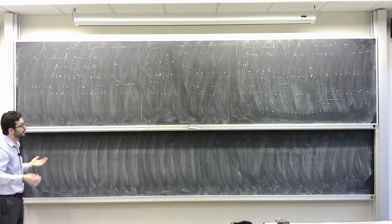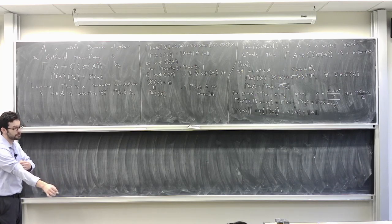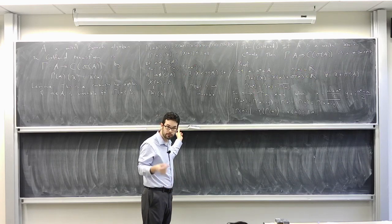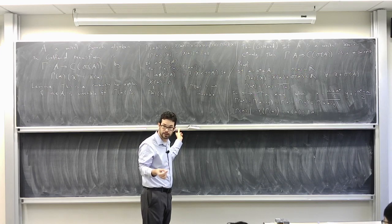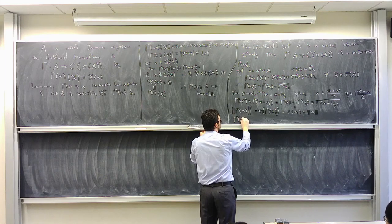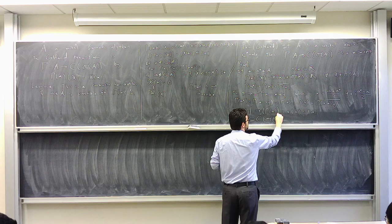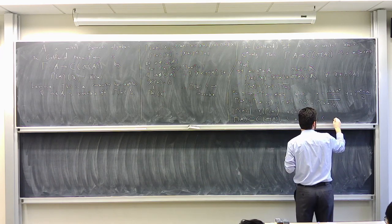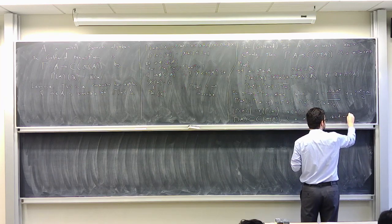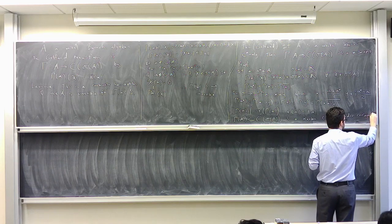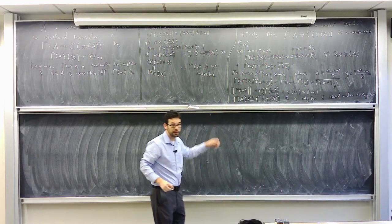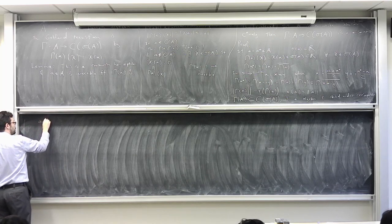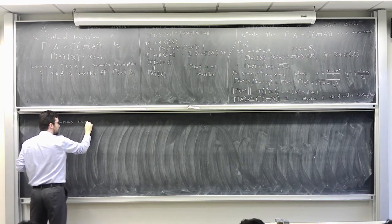In particular, gamma is an injective map. So the only thing left is to show surjectivity. It's an injective star homomorphism, so whatever the range is, we know it's going to be some algebra of continuous functions. We know that gamma of A inside the space of continuous functions is an algebra closed under conjugation. We also know the Gelfand transform of the identity gives us the constant function, so this also contains constants.